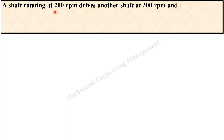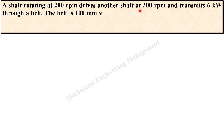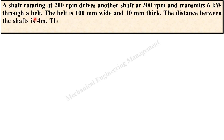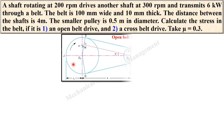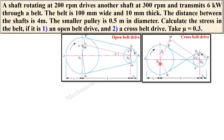A shaft rotating at 200 rpm drives another shaft at 300 rpm and transmits 6 kilowatt through a belt. To understand the description, let us consider the figure. Here is the open belt drive and this one is the cross belt drive.